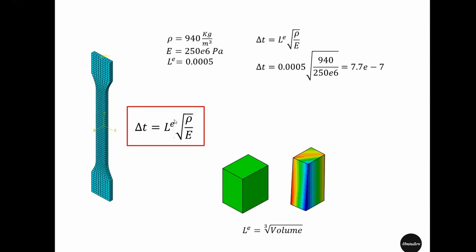To get a larger characteristic length we have to use larger sized elements. That might not always be possible, but it is good to know that the size of the element is directly proportional to the computation time for explicit simulation.